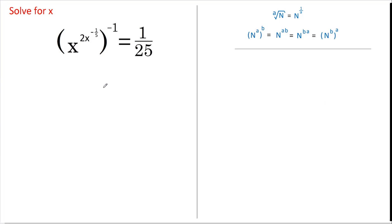Hi, welcome back. Today I'm going to solve this rather tricky looking exponent problem. When we raise something to the power of negative 1, all it means is invert.